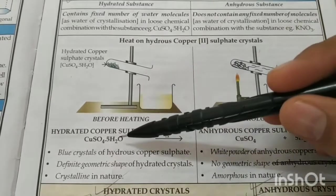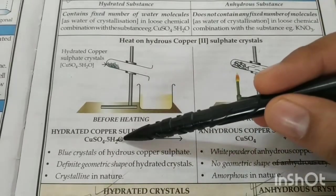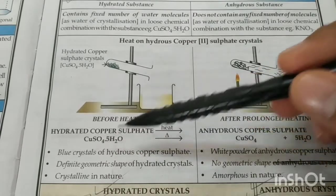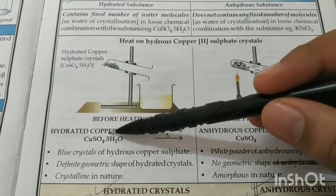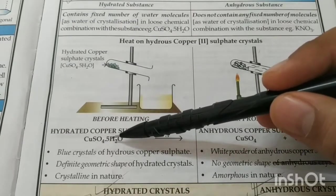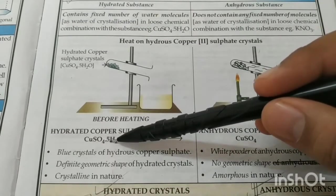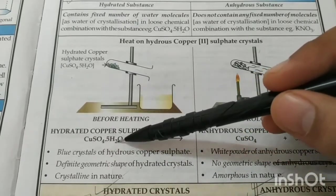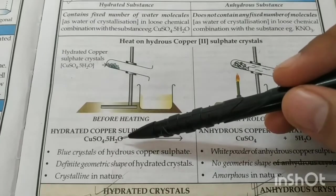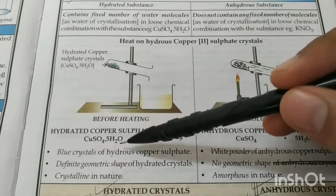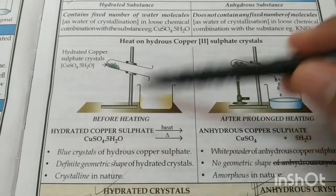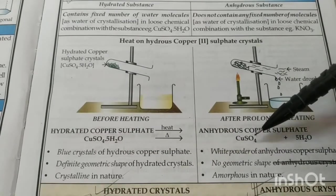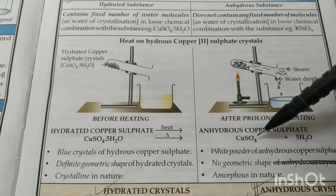Many salts have a fixed number of water molecules associated with them — represented by a dot, indicating a loose chemical combination. Such water is called water of crystallization. For example, hydrated copper sulfate (CuSO₄·5H₂O) has a characteristic blue color because of this water. If you heat it, the water of crystallization evaporates, leaving behind anhydrous copper sulfate, which is white and amorphous (powdery) rather than crystalline.